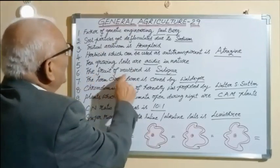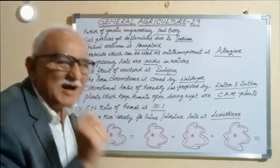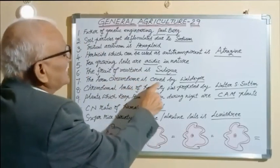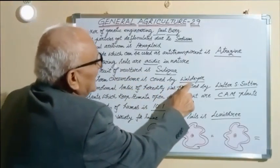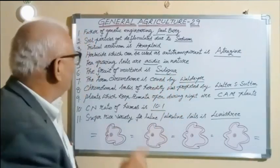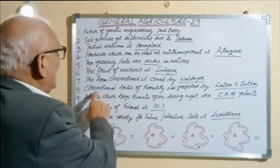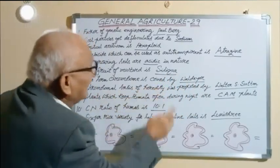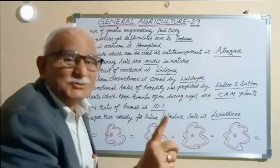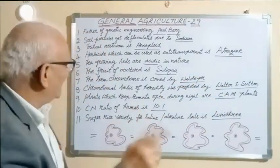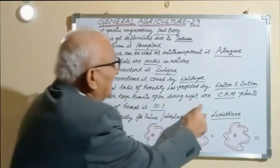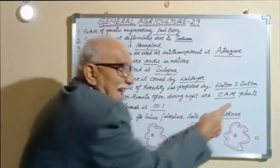The fruit of mustard is siliqua. The term chromosome was coined by Waldeyer. The chromosomal basis of heredity was proposed by Walter S. Sutton. Plants which keep their stomata open during the night are CAM plants.